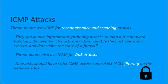Diving deeper into ICMP attacks themselves, threat actors use ICMP attacks for reconnaissance and scanning. This is commonly used for gathering information — they want to map out the network topology and discover which hosts are active and reachable. They can even use these attacks to identify the host operating system, known as fingerprinting, and can even identify the service pack in use. ICMP attacks can also determine the state of a firewall and what is reachable through it.